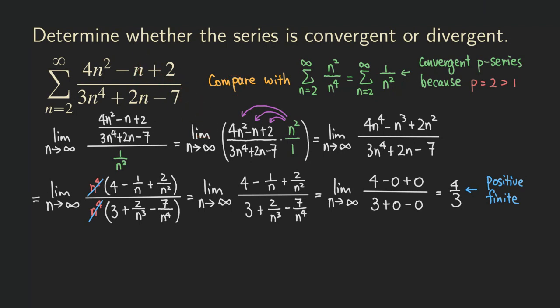So we can write down the conclusion: the series — three n to the fourth plus two n minus seven in the denominator — this series converges.